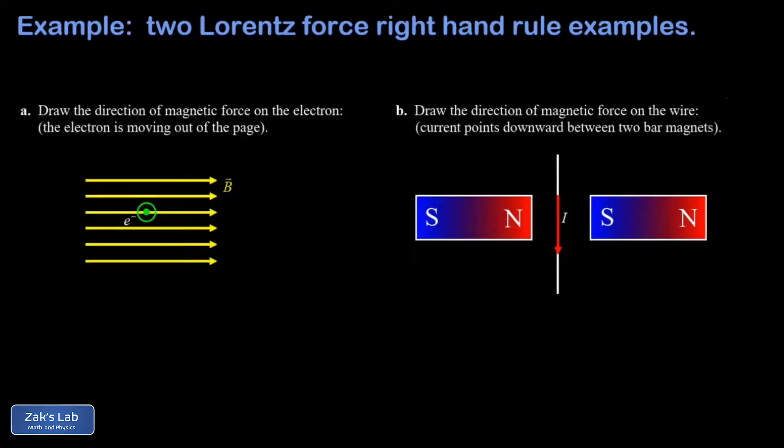In this video we're looking at a couple qualitative Lorentz force right hand rule examples. In other words, we want to get the direction of the magnetic force on a moving charge in a magnetic field. I'll post a link to the video where I first introduced the Lorentz force right hand rule, and there's several different ways to do it.